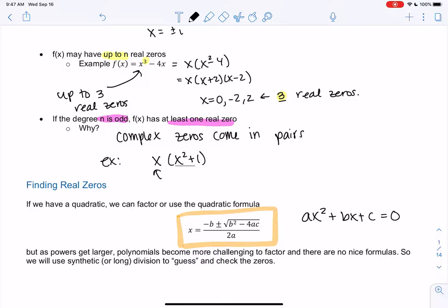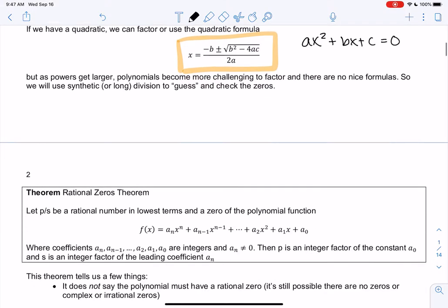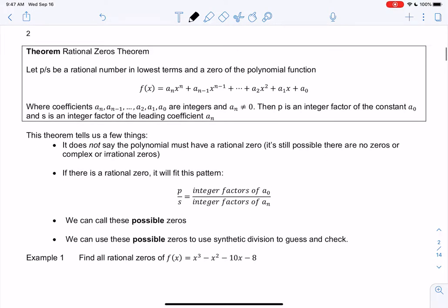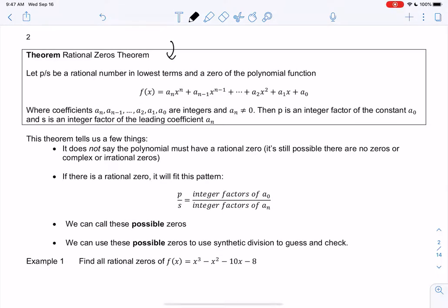So as powers get larger, polynomials will become more challenging to factor, and we don't have any nice formulas anymore. So we're going to use synthetic division to guess and check. So how can we guess and check? We want to make educated guesses, and the rational zero theorem tells me how to make educated guesses. Because we don't want to just guess any number. Because we'll just be doing long division forever, right? If we just guess numbers. So this is going to give us a technique to guess and check. But it's going to narrow down the pool of numbers to guess.